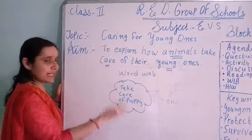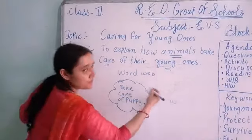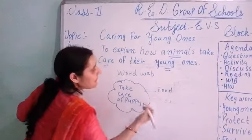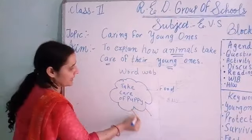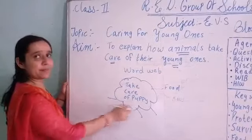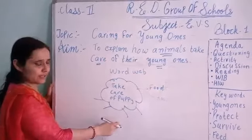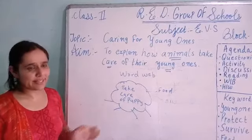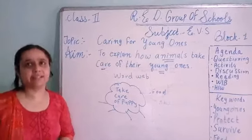I am telling you how to make a word map: make a cloud shape, write 'take care of puppy' in the middle, then write the words around it. For example: I will give food. Write how to take care of a puppy and write down the words. I hope you got it — thank you and have a nice day.